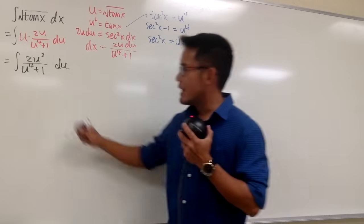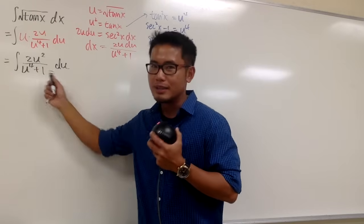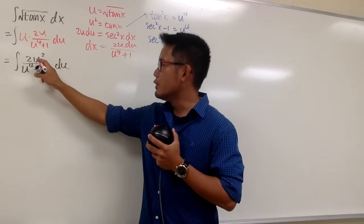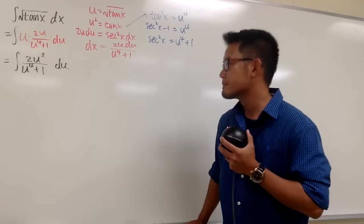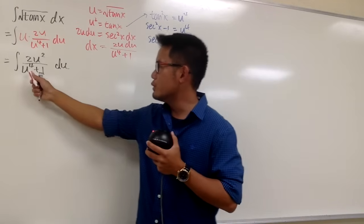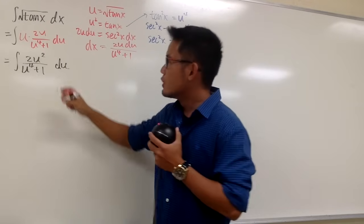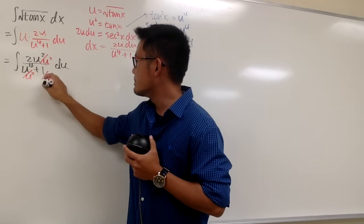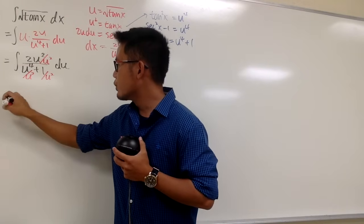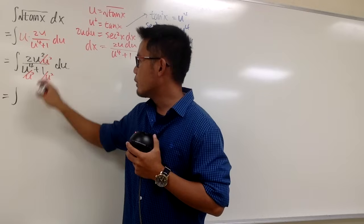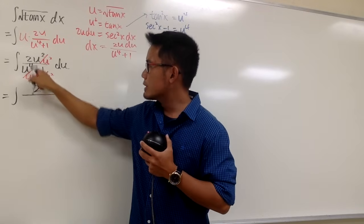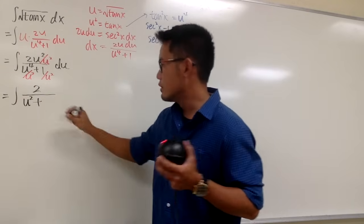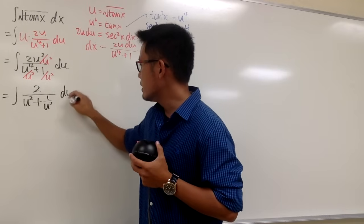The trouble is right here — we have u to the fourth power plus 1, and the power is slightly too high. Is it possible to reduce the power? Well, we do have u squared on the top — maybe we can utilize that. Why don't we divide everything by u squared? So let's divide the numerator and denominator by u squared. On the top we get just 2, and on the bottom we get u squared plus 1 over u squared.